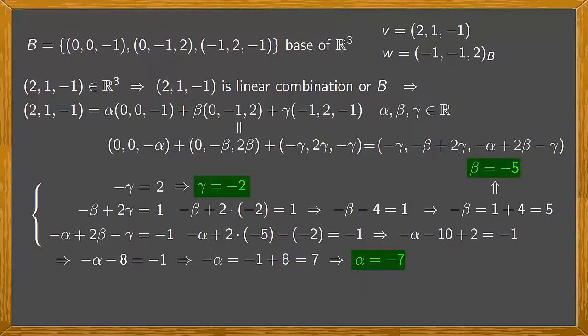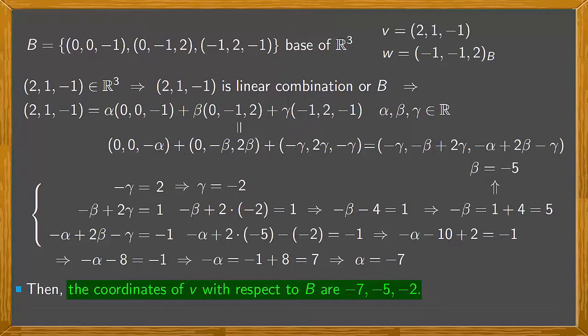The coordinates of V with respect to the basis B are α, β and γ, or as we now know, the coordinates are -7, -5, -2. We can express this as V is equal to (-7,-5,-2)_B, where the B indicates that these are the coordinates with respect to basis B.